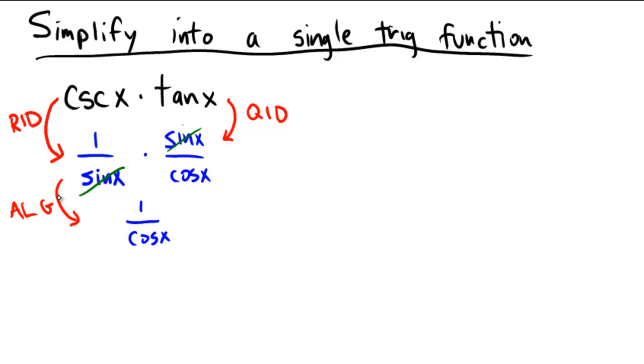Okay, now one over cosine of x is another trig function. One over cosine is the same as the secant of x. So that's actually going to be our final answer here. This is a simple single trigonometric function and the justification for being able to say that one over cosine is secant is again a reciprocal identity. So this is an RID, a reciprocal identity.